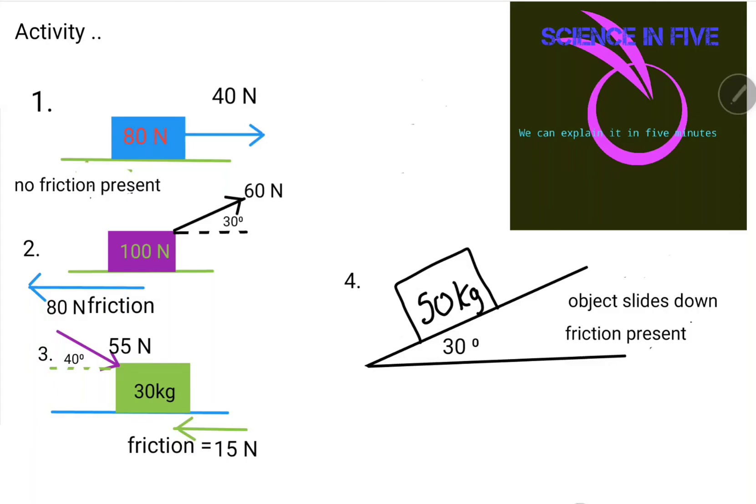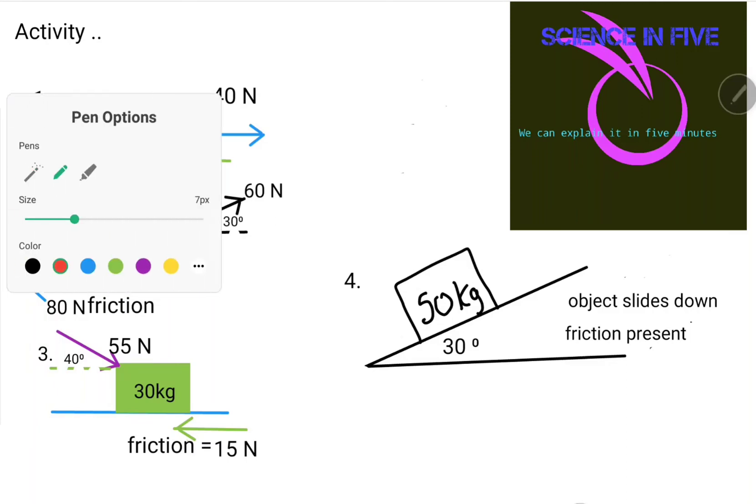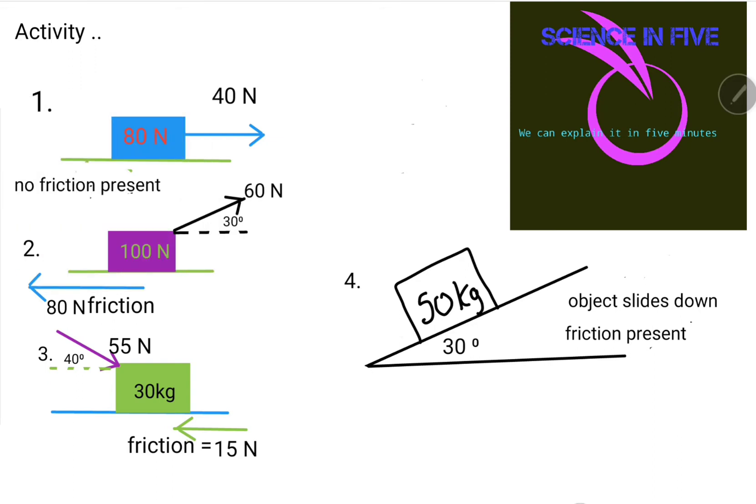Hi guys, welcome to Science in Five. Let's draw some free body diagrams. Diagram one: we've got a 40 newton force acting on an object of weight 80 newtons.